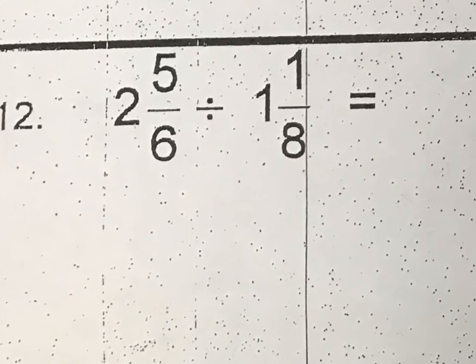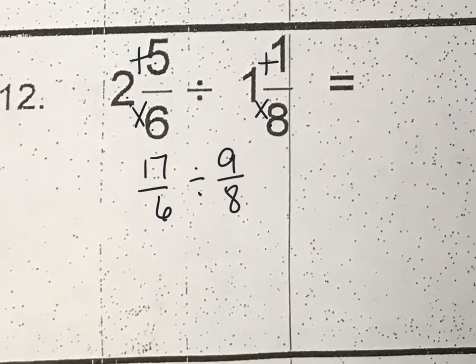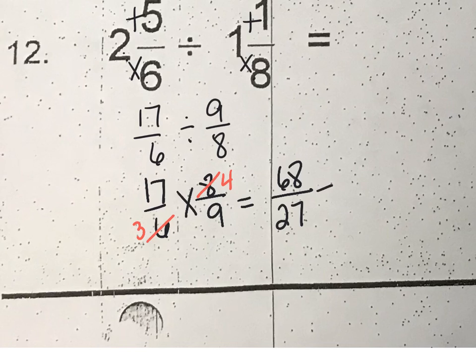And then our dividing fractions, we're going to make them improper by changing them. So 6 times 2 plus 5 is 17 sixths. And then 8 times 1 plus 1 is 9 eighths. And then we can't divide fractions, remember, so we have to keep, change to multiply, and flip our next one. So I'm going to simplify because both of these are divisible by 2. And 17 times 4 is 68. 3 times 9 is 27. Man, these are not pretty today. 27 will go into 68 twice, which is 54. And leave 14 twenty-sevenths. There's your answer.